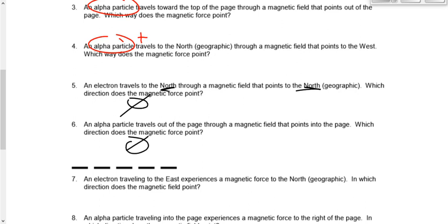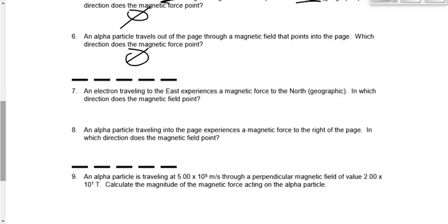Number seven: an electron travels to the east, and the magnetic force is to the north. I know my thumb and my palm — thumb to the east, palm to the north — so fingers point up. You don't need to say 'up the page' because earth is our frame of reference. Number eight: an alpha particle traveling into the page, magnetic force toward the right of the page. Right hand because it's alpha. Thumb into the page, fingers toward the right of the page — palm, or rather fingers, point up the page, toward the top of the page.